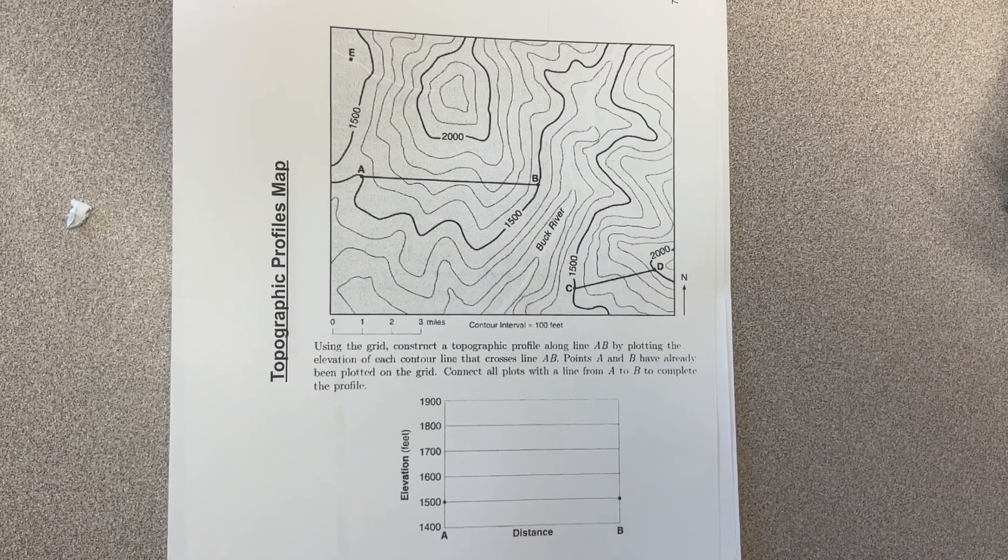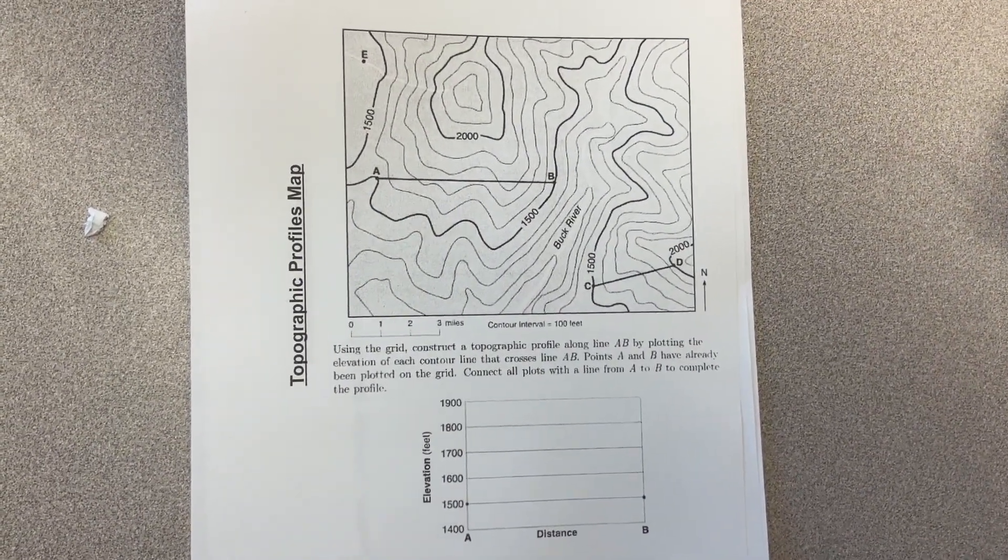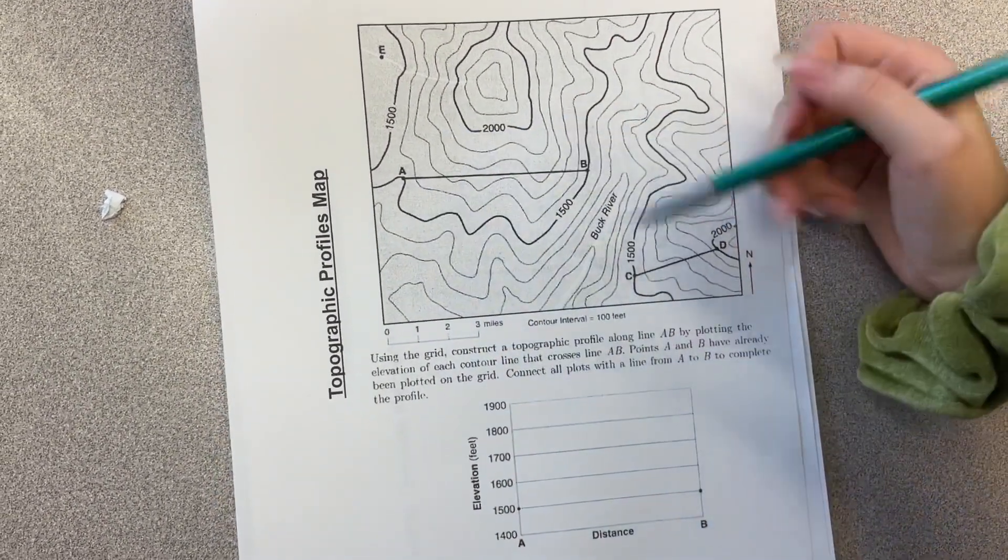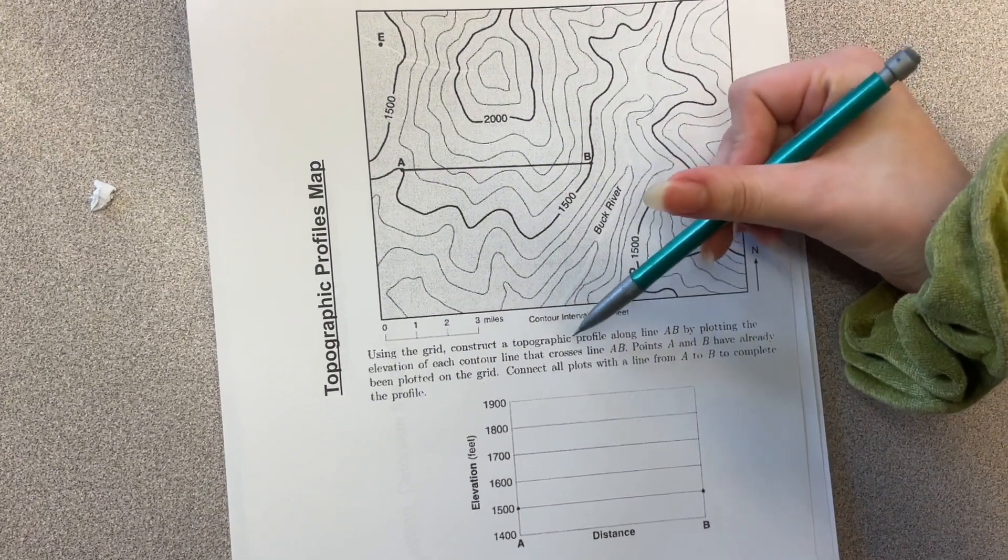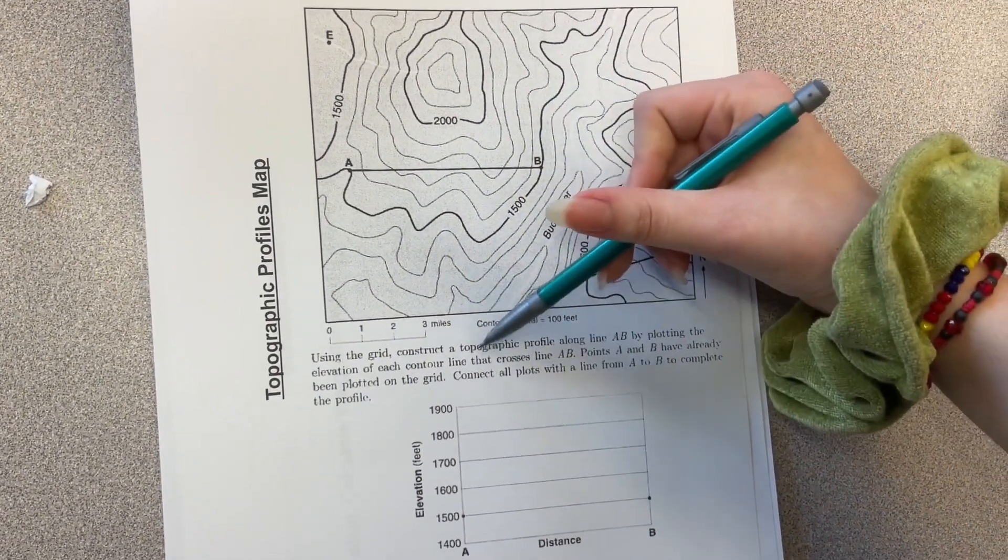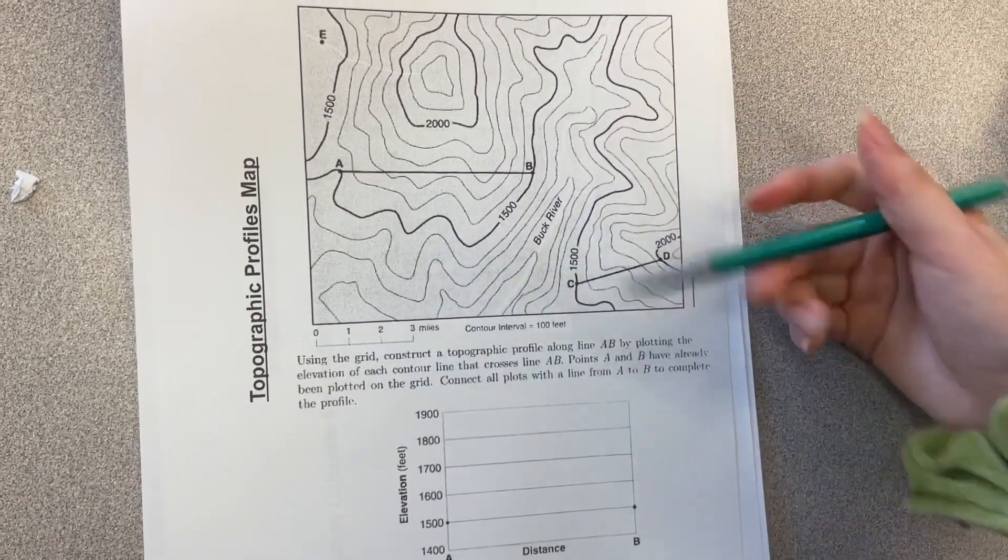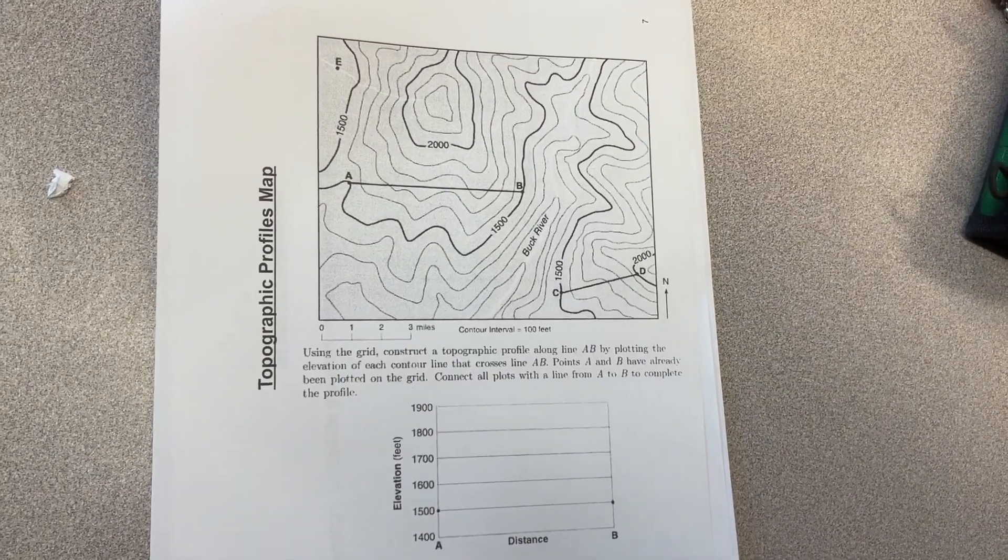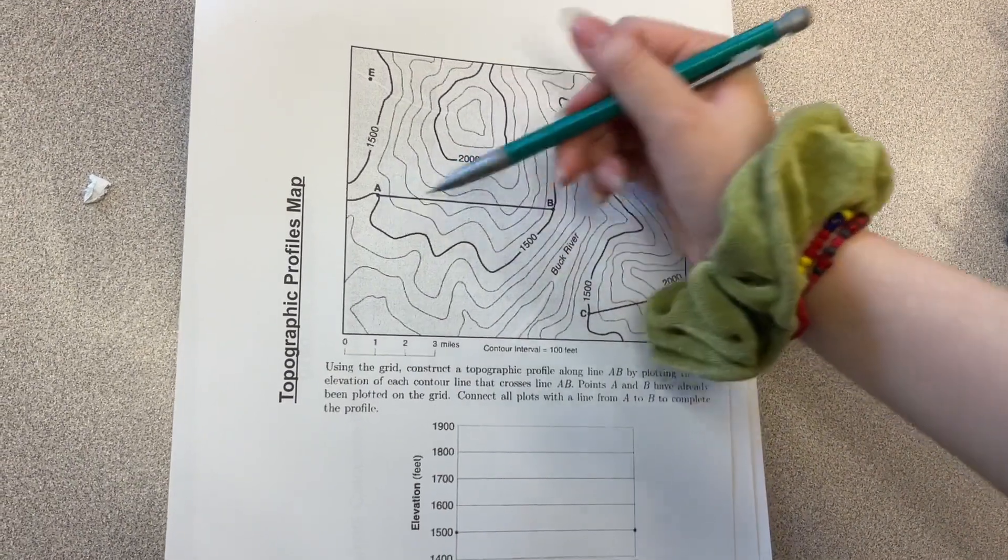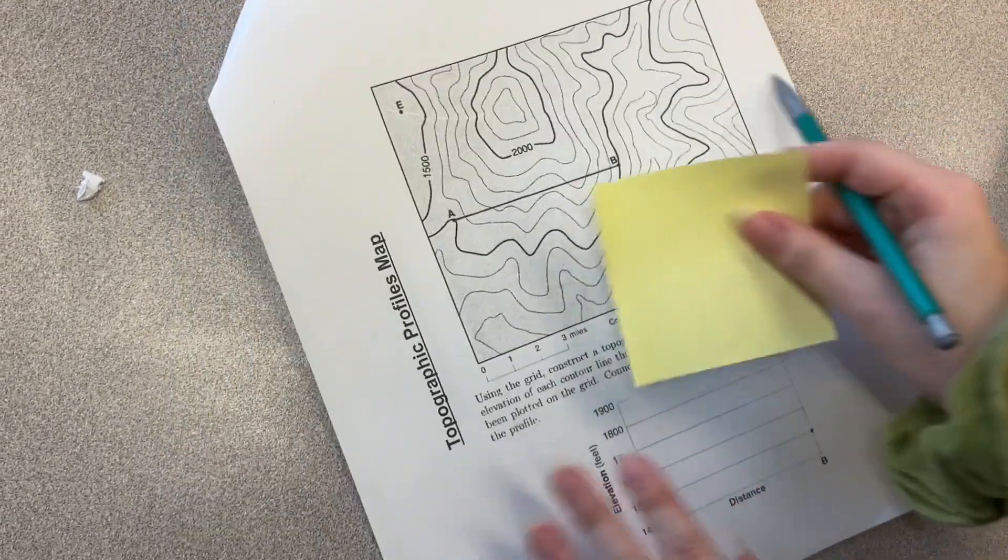So for a topographic profile map, let's read the first question. Using the grid, construct a topographic profile along line AB by plotting the elevation of each contour line that crosses line AB. Points A and B have already been plotted on the grid. Connect all the spots with the lines from A to B to complete the profile. So to begin, you have to use scrap paper for this to find the elevations of all the contour lines that line segment AB crosses.